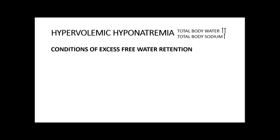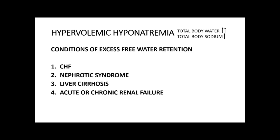In hypervolemic hyponatremia, total body water increases out of proportion to total body sodium. These are conditions of excess free water retention — common examples include congestive heart failure, nephrotic syndrome, liver cirrhosis, and acute or chronic renal failure. This can be categorized by urinary sodium: if less than 20, causes are CHF, nephrotic syndrome, or liver cirrhosis. If greater than 20, the cause is acute or chronic renal failure, because the renal tubule fails to absorb sodium.